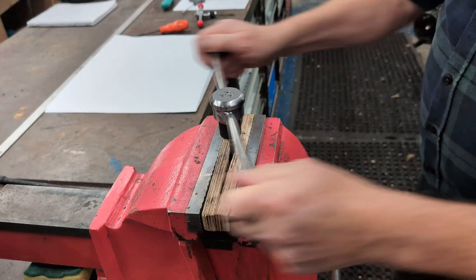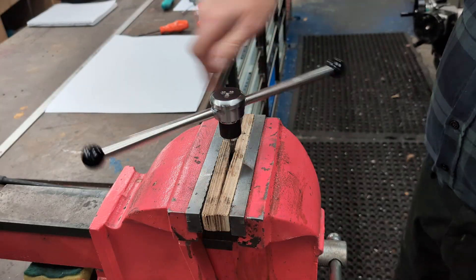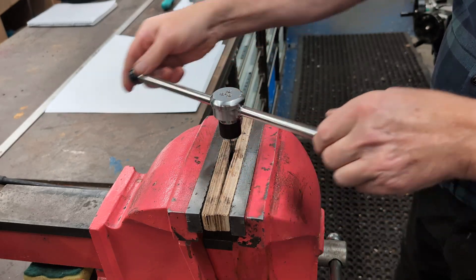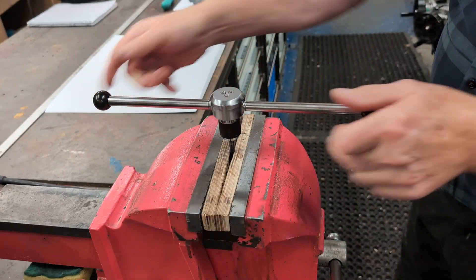The vise jaws here just provide some friction to simulate the resistance you'd get when tapping by hand. It's a simple way to test how the clutch feels under load.